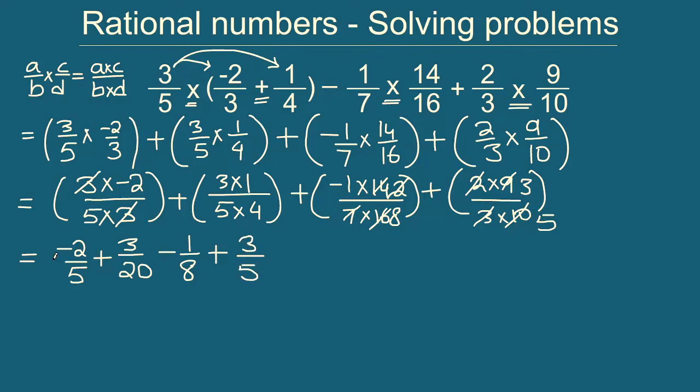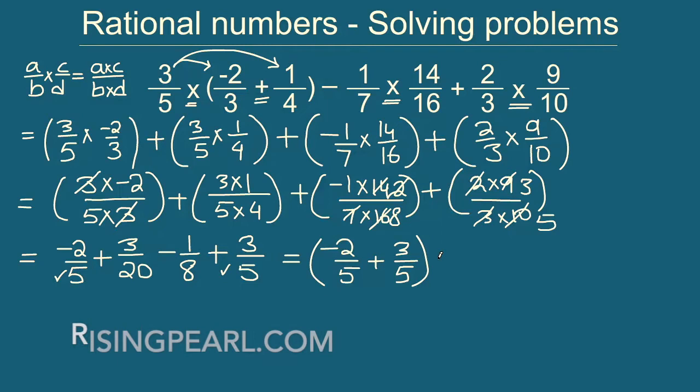Finally we have these 4 rational numbers. So let's see which we can group. Here we have a 5 in the denominator, here we have a 5 in the denominator. So let's write these two first. So let's say minus 2 by 5 plus 3 by 5. Let's group these two together. Then we will just go from left to right. So then we are left with 3 by 20, which is this done here, and then minus 1 by 8.